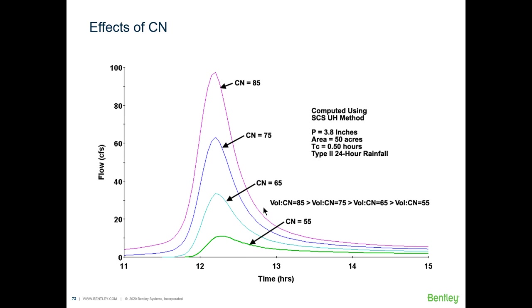What if we change the curve number and keep everything else the same? We kept the same precipitation depth and only changed the CN. For a CN of 85 we obtained a very large volume, whereas a CN of 55 has a much smaller volume. A CN of 85 represents a more paved surface, whereas 55 is a more grassy or forested, permeable area that generates far less runoff.